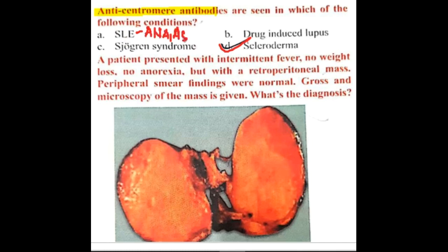In SLE, which is drug-induced SLE, you will see anti-histone antibodies, so there are many types of antibodies in SLE. In Sjögren's syndrome you will see Sjögren's syndrome A, which is the Ro antibody, and Sjögren's syndrome B, which is the La antibody. Drug-induced lupus has anti-histone antibody, and scleroderma has anti-centromere antibody.